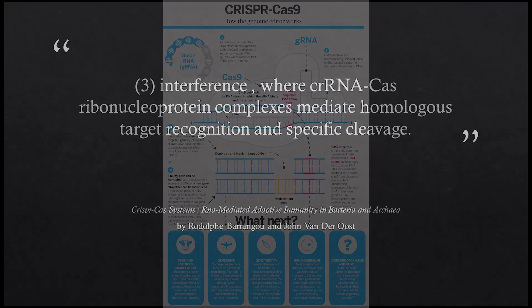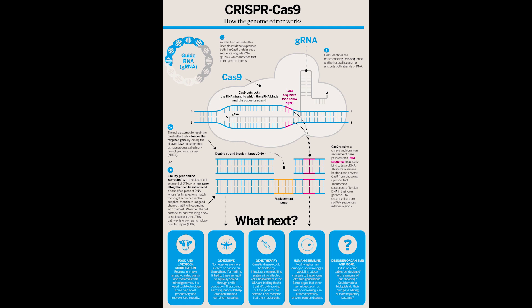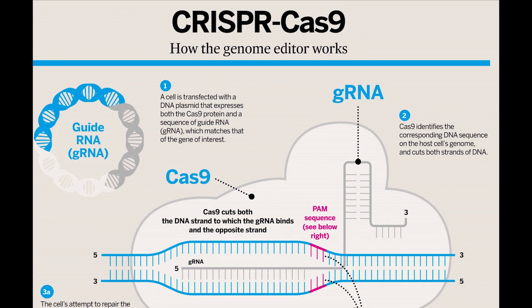Now, let's break that all down. In my research, I found a great graphic distributed by the British Society for Gene and Cell Therapy. First, a gene or cluster of genes are identified that are affected by whatever affliction scientists are trying to correct, or whatever virus the bacteria or archaea are trying to fight. Next, a cell is transfected with a DNA plasmid that expresses both the CAS protein and a sequence of guide RNA that matches the gene of interest. Essentially, a protein associated with the CRISPR cuts both strands of the DNA.